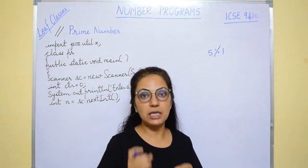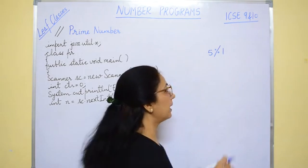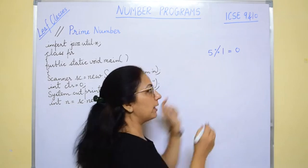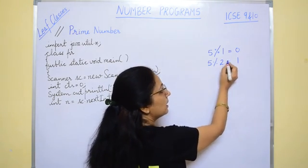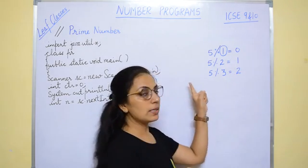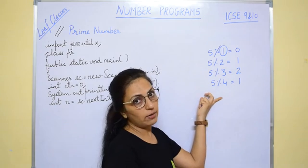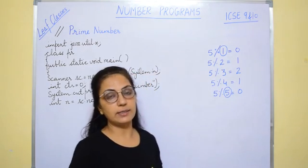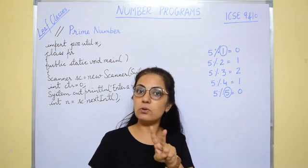If the remainder is coming zero, that means the denominator is a factor. 5 mod 1 equals 0, so 1 is a factor of 5. 5 mod 2 equals 1, so 2 is not a factor. 5 mod 3 equals 2, so 3 is not a factor. 5 mod 4 equals 1, so 4 is not a factor. And 5 mod 5 equals 0, so 5 is a factor. For 5, we have only two factors — 1 and 5. After completion, we count how many factors there are. If it is only two, that means it is a prime number.